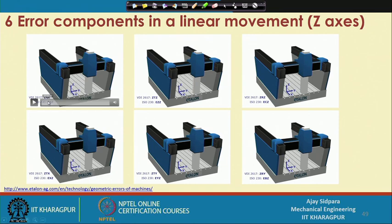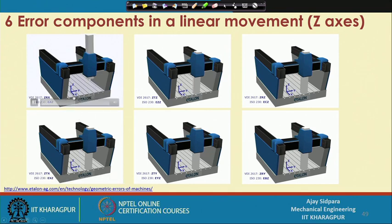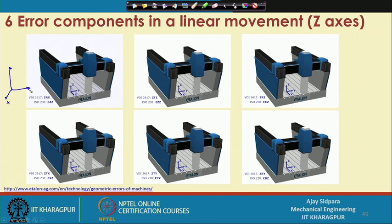Here the motion is in the z-direction but rotation is around the x-axis. You can see it is moving up and down but it is swinging around the x-axis considering this particular configuration. This one is your z-direction, this one is your x-direction, and this one is your y-direction. So your spindle, when it is moving up and down, is actually swinging, and that is not acceptable.